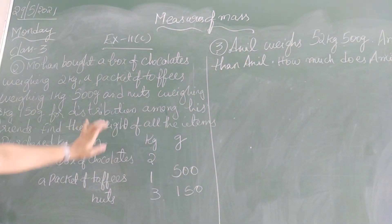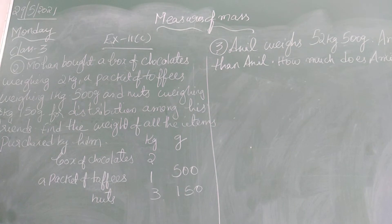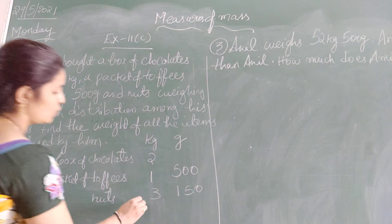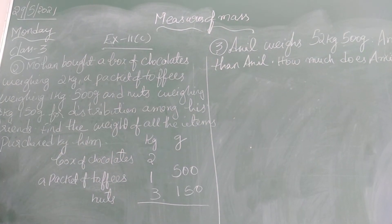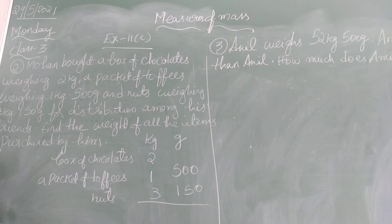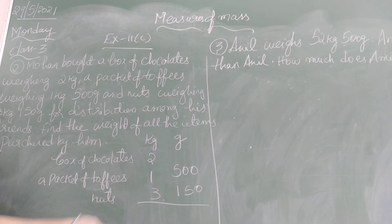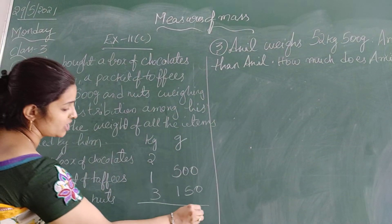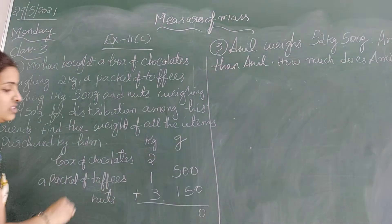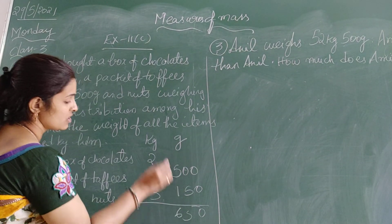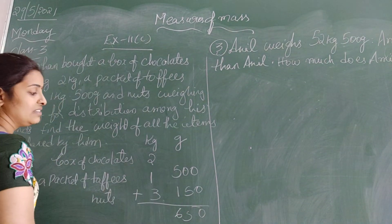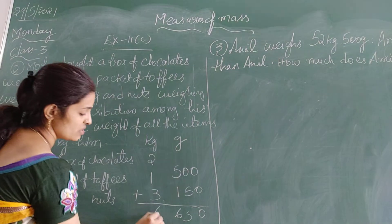So we got the total of how much he brought for distribution among his friends. Let us find out the total in kgs. So: 0 plus 0 is 0, and 0 plus 5 is 5, and 5 plus 1 is 6. And 2 plus 1 is 3, and 3 plus 3 is 6.